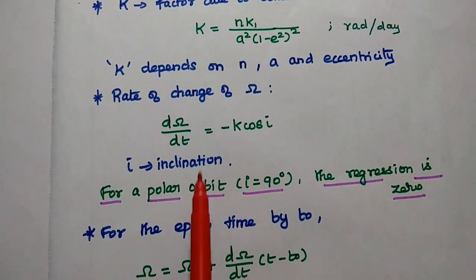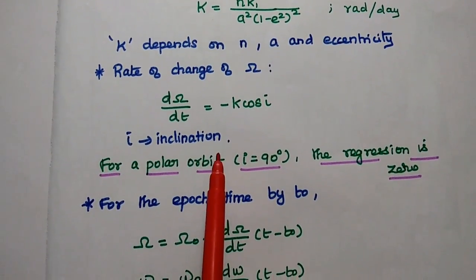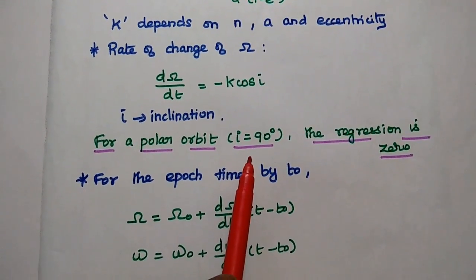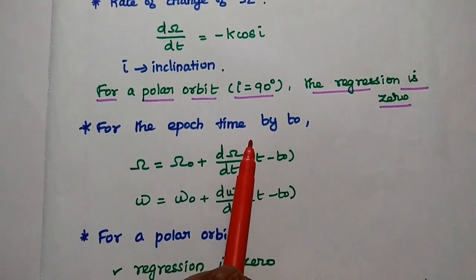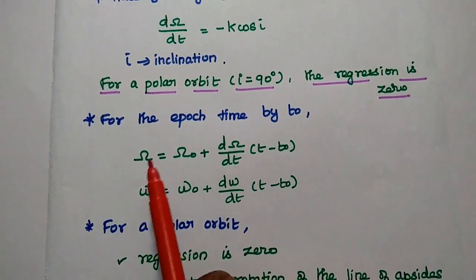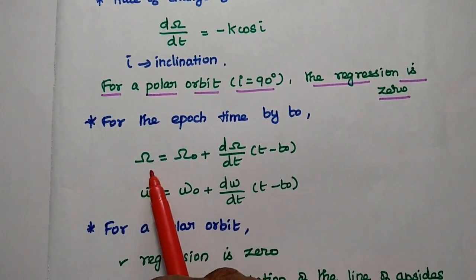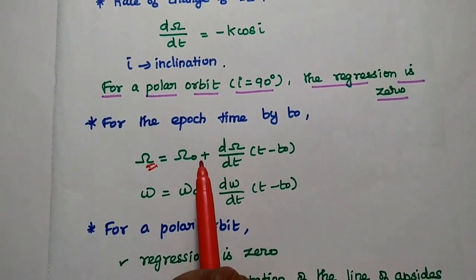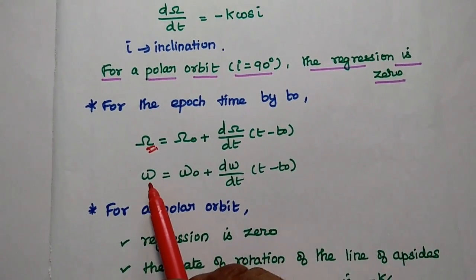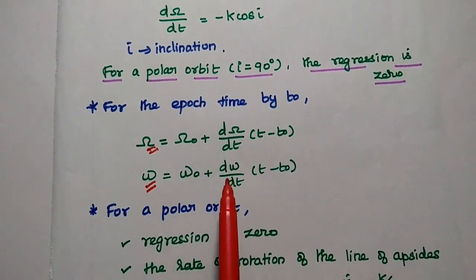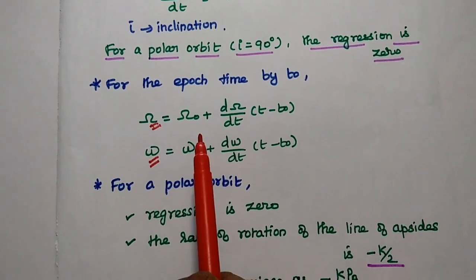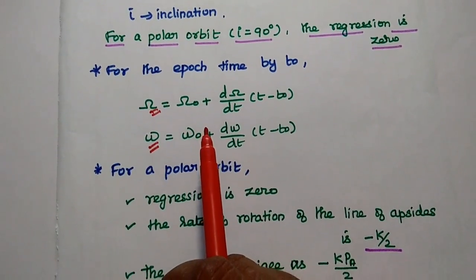For a polar orbit, where inclination i equals 90 degrees, the regression becomes zero. Considering epoch time, where one complete time period is t0, the right ascension of the ascending node can be obtained as Omega equals Omega0 plus d(Omega)/dt times (t minus t0). Similarly, the argument of perigee omega equals omega0 plus d(omega)/dt times (t minus t0). For each epoch time, we can calculate the omega values with respect to t0.